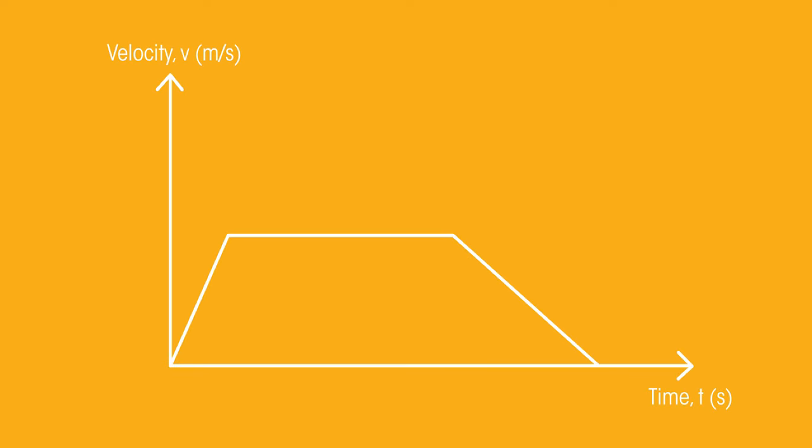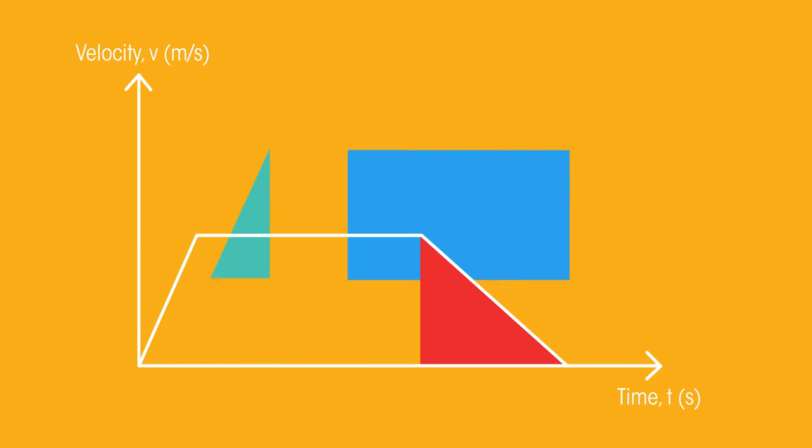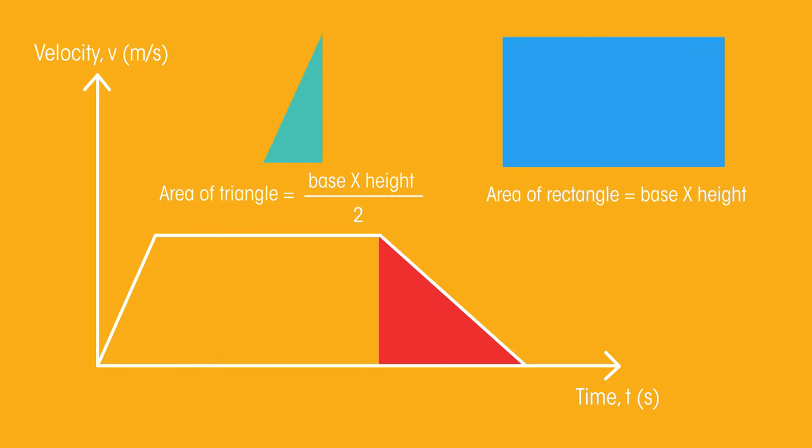The area won't always be quite so simple to calculate. Velocity time graphs more commonly look like this. We can calculate the area underneath the line by cleverly splitting the area into triangles and rectangles. Remember that the area of a triangle is the base multiplied by its height divided by 2.